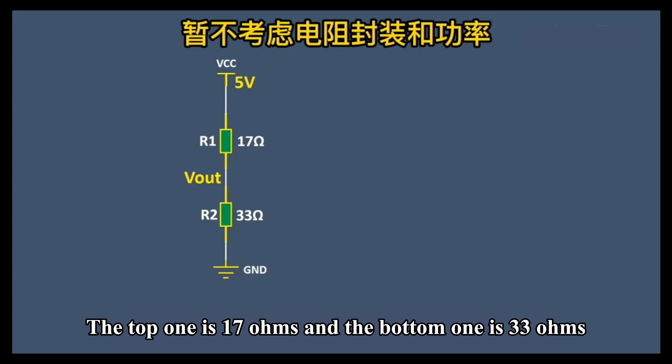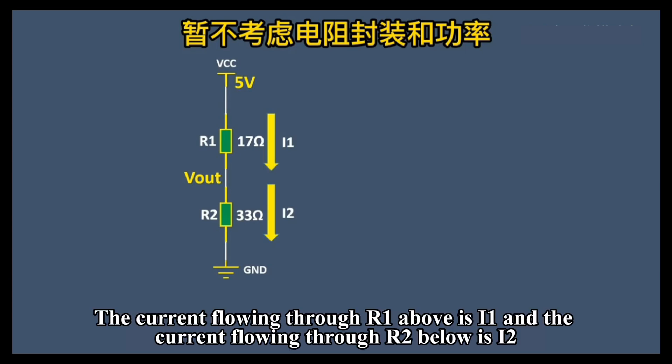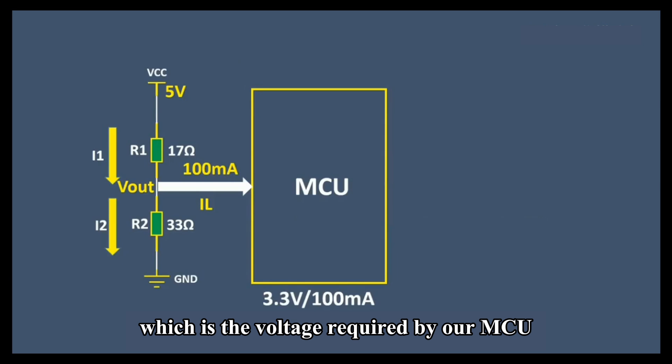The top resistor is 17 ohms and the bottom one is 33 ohms. The voltage in the middle is Vout. The current flowing through R1 above is I1 and the current flowing through R2 below is I2. We can calculate that I1 equals I2 equals 100 milliamps and then Vout can be calculated to be equal to 3.3 volts, which is the voltage required by our MCU.